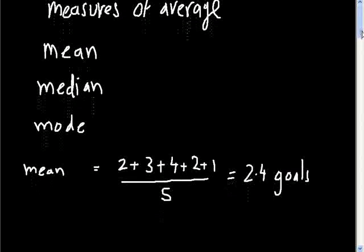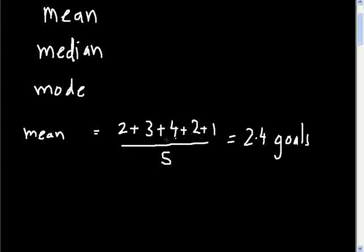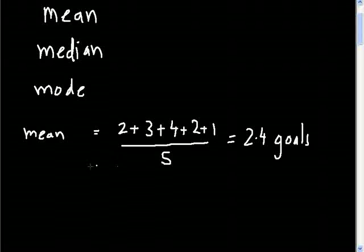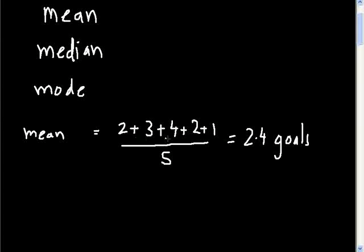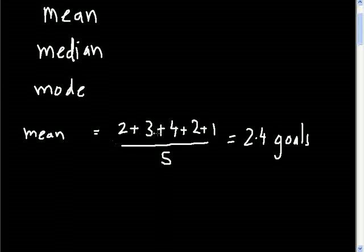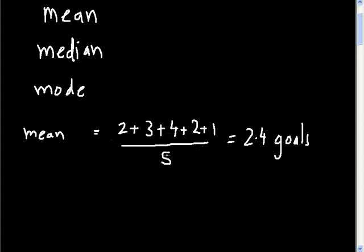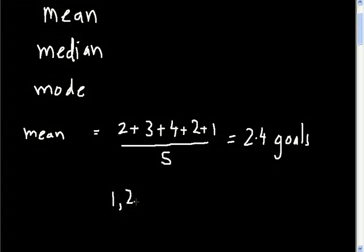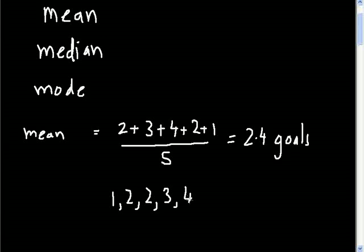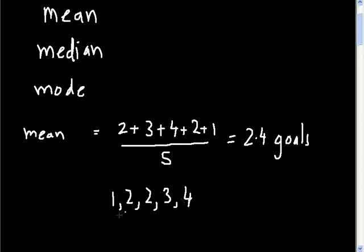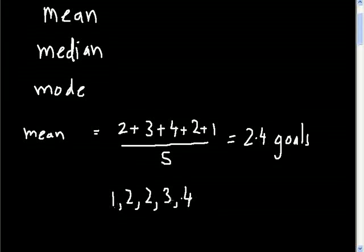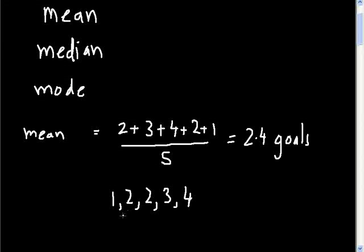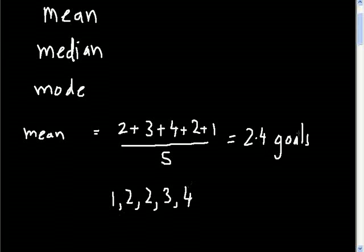Now let's look at the median. For the median, you have to arrange everyone in the data set in ascending order. So one comes first, then two, then another two, then three, then four.